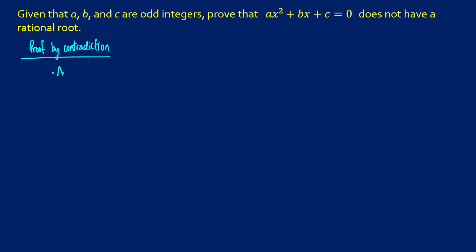What we're going to do is make an assumption. So our conclusion we're going to say is false. We're going to assume that ax squared plus bx plus c equals 0 has a rational root.